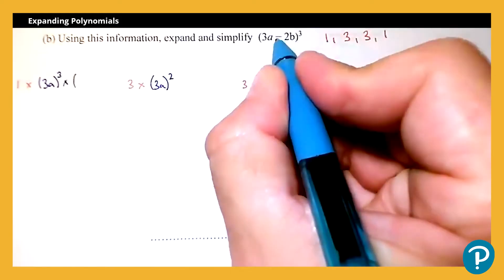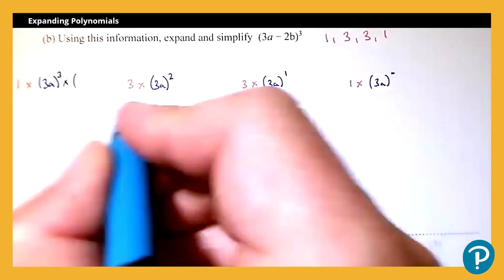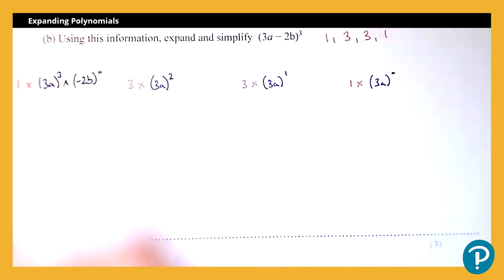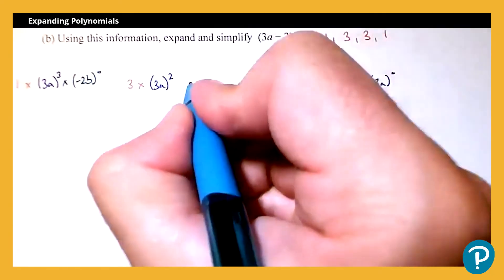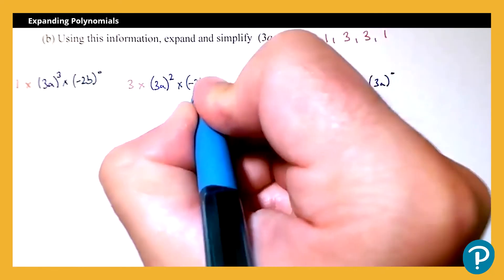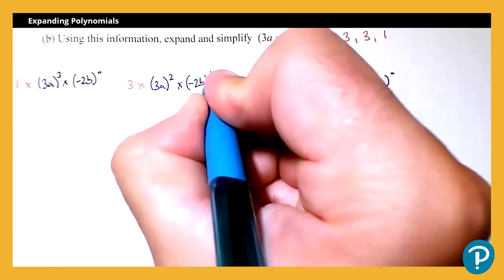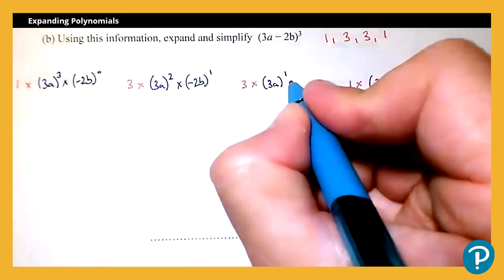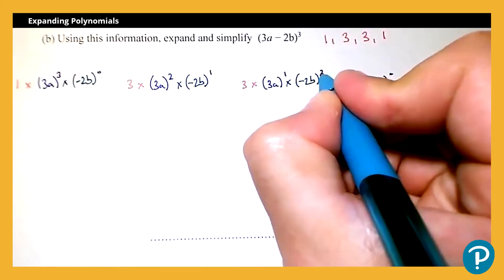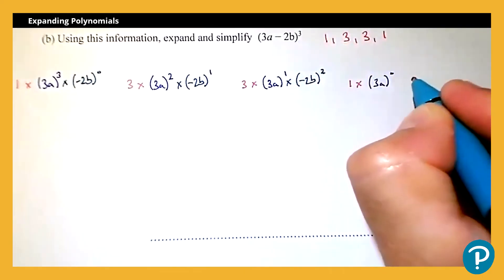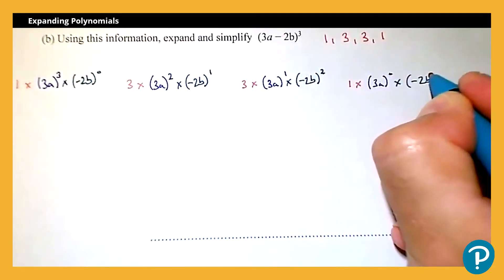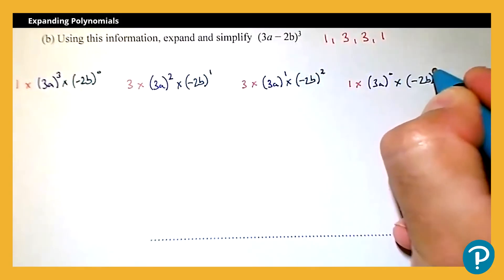Now for the second terms — this is where we need to be really careful because of the negative sign. We need (−2b) to the power 0, (−2b) to the power 1, (−2b) to the power 2, and (−2b) to the power 3.